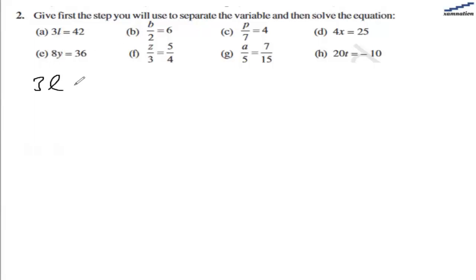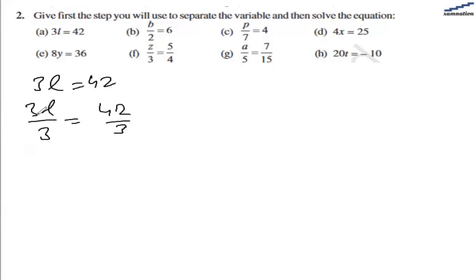For the first part we have 3L equal to 42. L is the variable, so we divide both sides by 3. We have 3L divided by 3 equal to 42 divided by 3. The 3s cancel out, leaving L on the left hand side, and 42 divided by 3 is 14 on the right hand side. So L equal to 14 is the solution for part a.